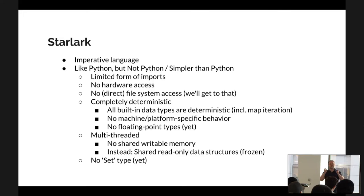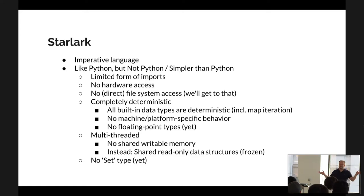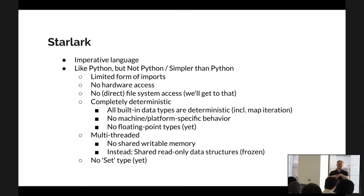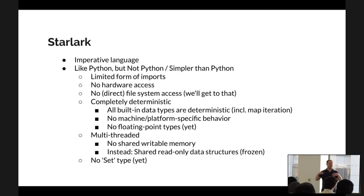Originally Starlark was called Skylark, but the Google trademark office said that name was taken, so the team settled on Starlark — which is why you still see 'sky' in some names and not in others. If you need set operations in Starlark, you can use the Skylib library or emulate sets using a map where the keys act as set members. There is also the depset type, which is really important and I may or may not get to depending on what you want to discuss.